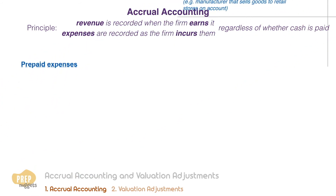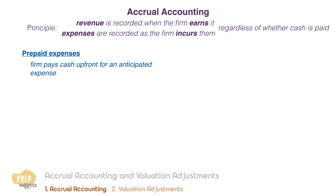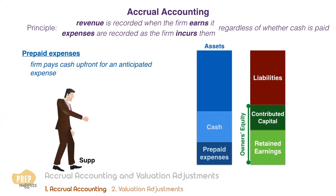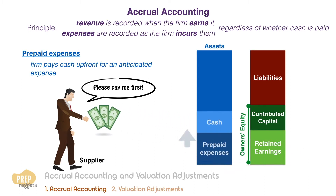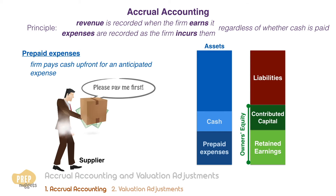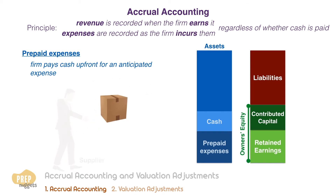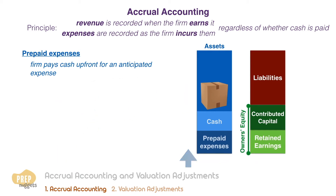The prepaid expenses account is updated when the firm pays cash upfront for an anticipated expense. For instance, the firm pays the supplier in cash first before the supplier delivers the goods or service. Cash decreases on the balance sheet and prepaid expense increases. When the supplier delivers the goods or service that has already been paid for, the expense is actually incurred — prepaid expense decreases and expenses increase.